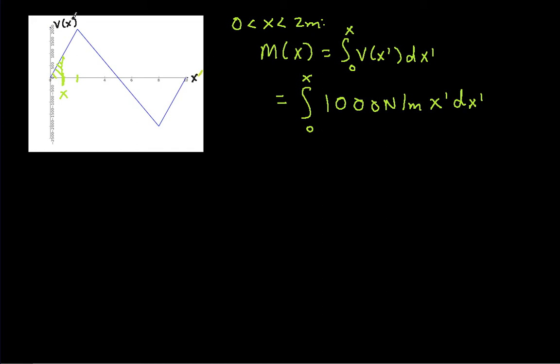I should say this is v(x'). So I can work this integral. The 1000 newtons per meter is a constant. So I have the integral from 0 to x of x' dx', which gives me an x squared term, or x' squared term, which I then plug in 0 and x for. When I'm all done, I get that this is 1000 newtons per meter x squared over 2. The 0 over here goes away. So this basically gives me the moment function between 0 and 2.